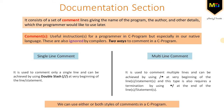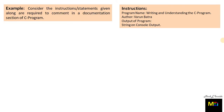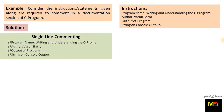We can also use either or both styles of comments in a program. Let's understand with an example. Consider the instructions required to comment in a documentation section of a C program: program name is 'writing and understanding a C program,' author is 'Varun Batra,' and output of the program is 'string on the console output.' Let's initially comment these using single-line comment format — double slash at the beginning of every line.